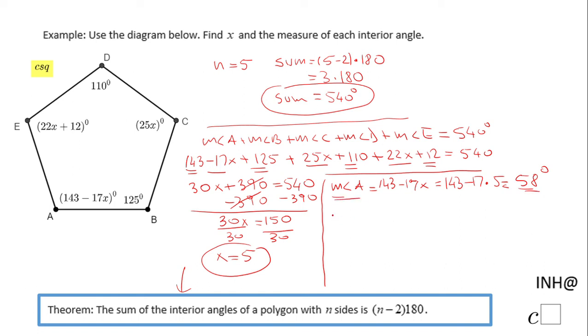The measure of angle B is given to us, so I'm just going to list it here: 125 degrees. The measure of angle C is 25x, so we just have to do 25 times 5, and that will be 125 degrees.